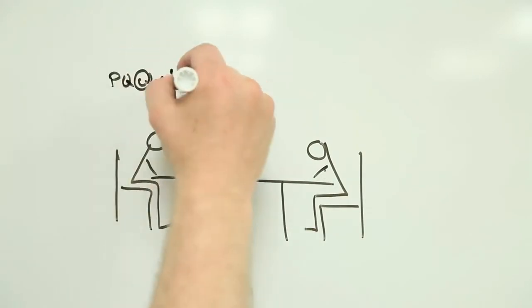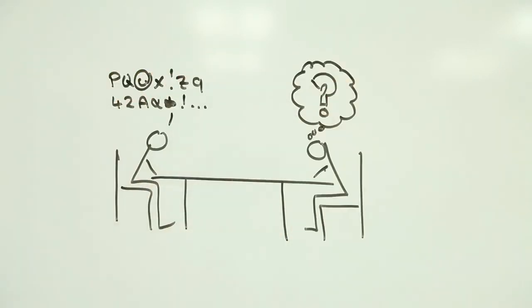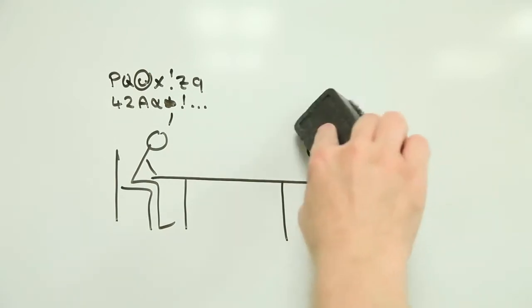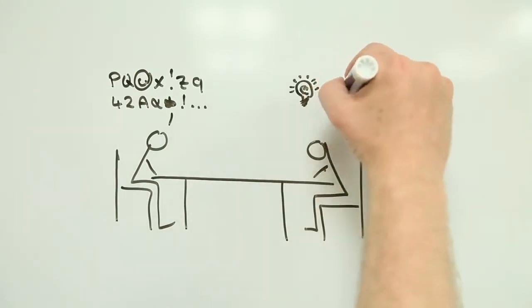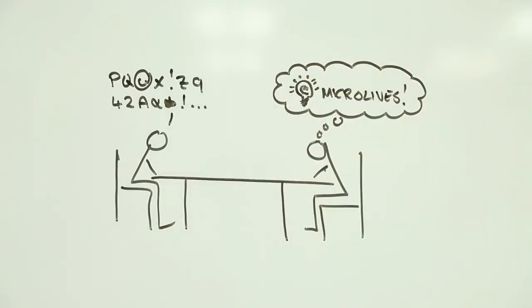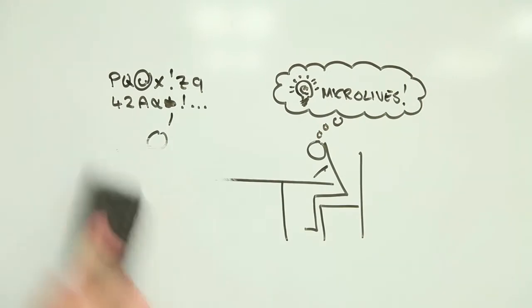This is where Microlives come in. To help make sense of these long-term risks, University of Cambridge professor David Spiegelhalter recently came up with The Microlife as a way of estimating how what you do now might affect how long you live in the future.